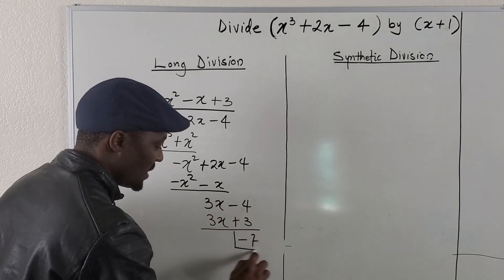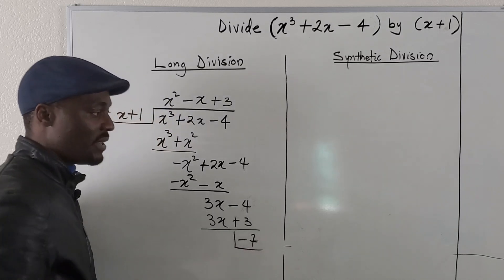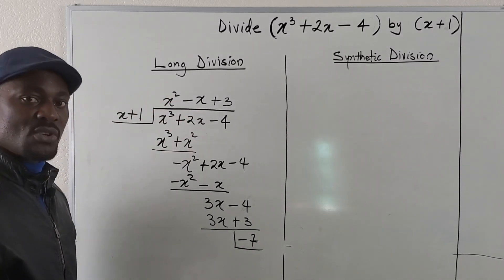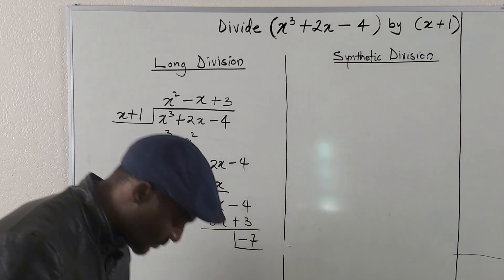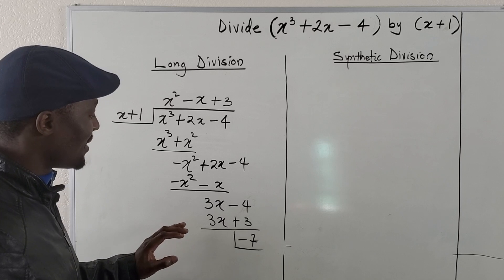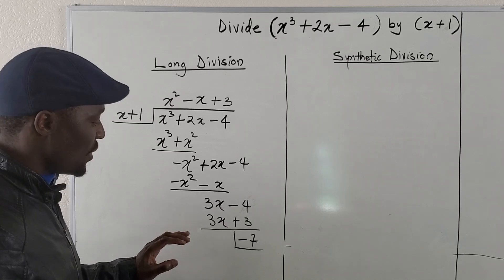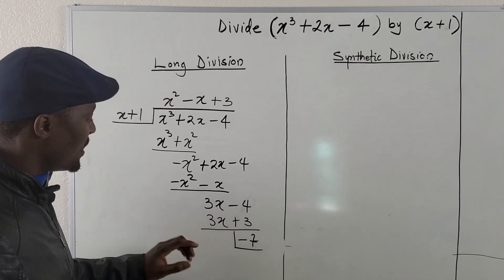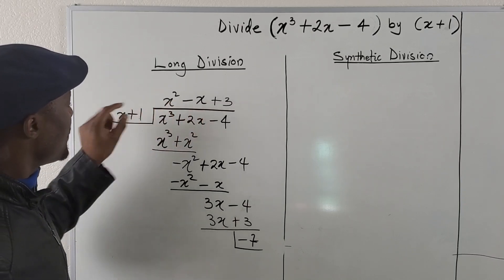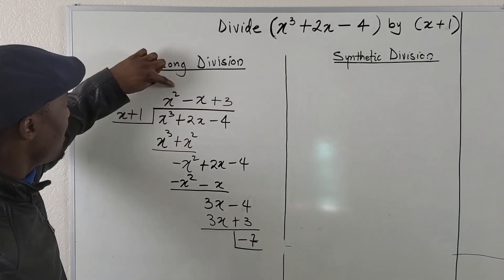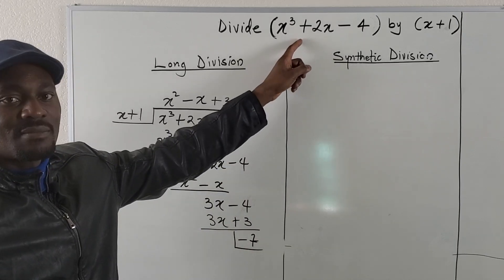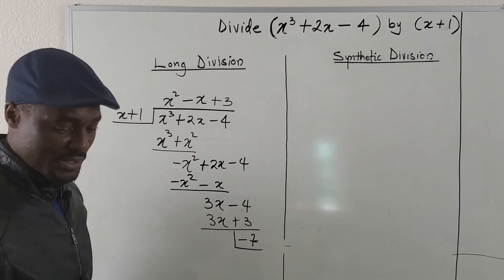So the remainder for this exercise is negative 7, and the quotient is x squared minus x plus 3. Which means, if you multiply the quotient by the divisor and then add the remainder, you're going to go back to the original polynomial. That's how that works.